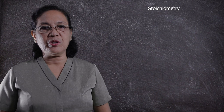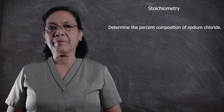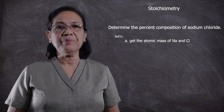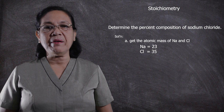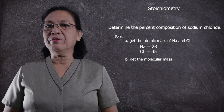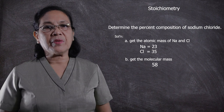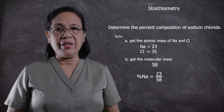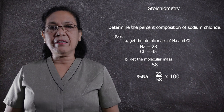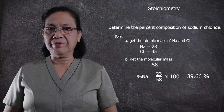For example, we are asked to determine the percent composition of sodium chloride. We know that sodium chloride is composed of the sodium atom and the chlorine atom. Sodium has an atomic mass of 23 grams per mole, while chlorine has an atomic mass of 35 grams per mole, getting a total of 58 grams per mole, and this is its molecular mass. Now, if you are going to get the percent composition of sodium, you have to divide 23, which is the atomic mass of sodium, by 58, which is the molecular mass of sodium chloride.